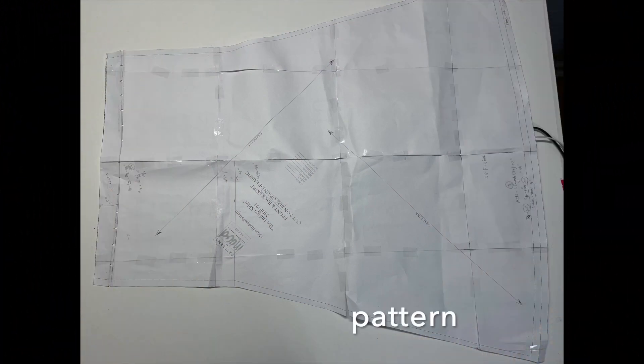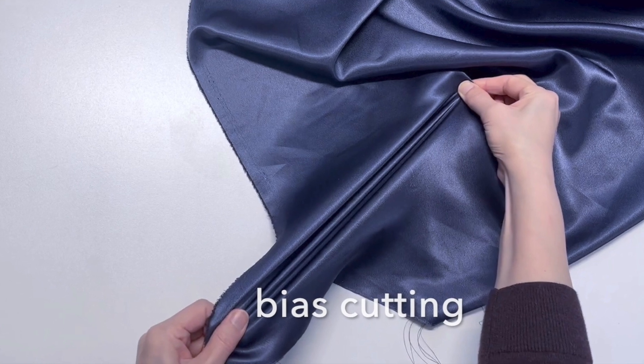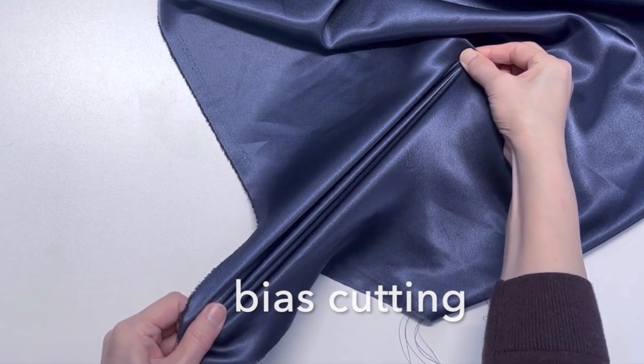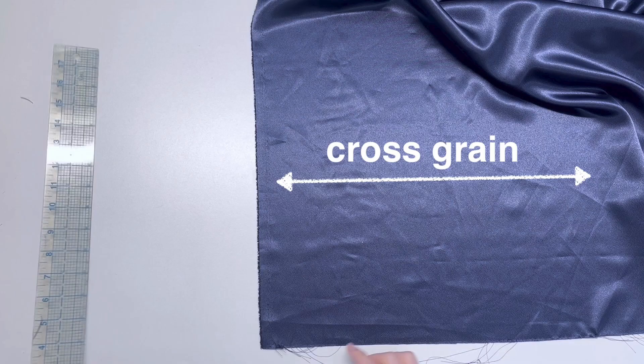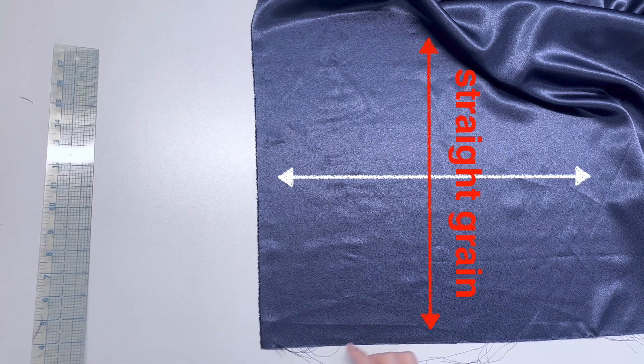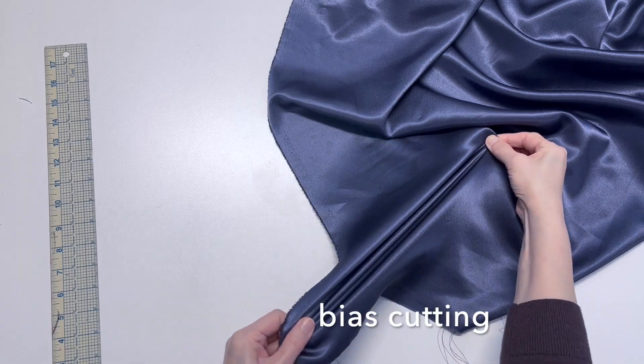This pattern link is in the description box below. We are gonna do a bias cut. Bias cut means to be cut on the grain. Rather than following the straight line of the weave, the bias cut places the pattern at a 45 degree angle on the woven fabric.